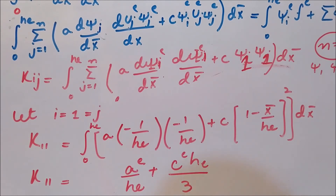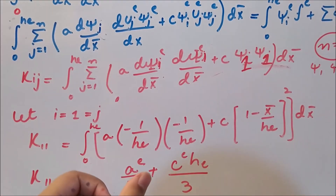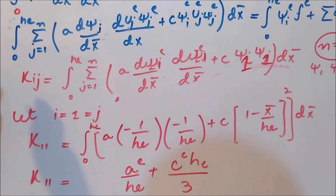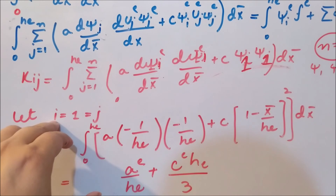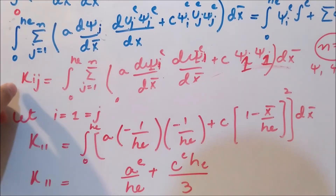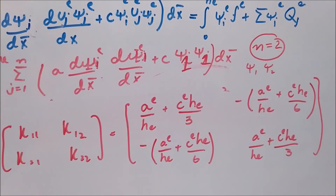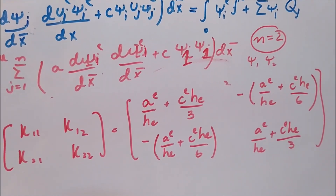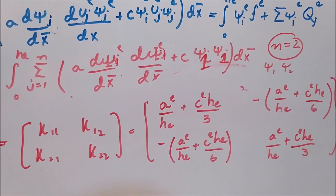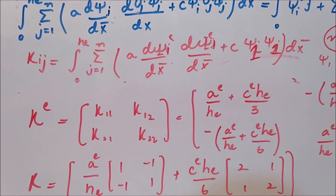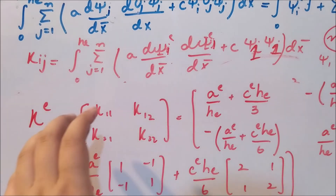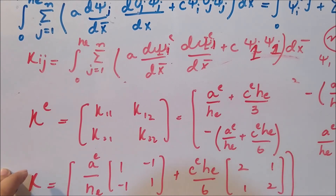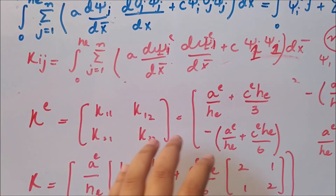After solving for all four values — noting that K_12 = K_21 because the stiffness matrix is symmetric, as discussed in previous videos — the full stiffness matrix for the linear element is assembled. This gives the 2×2 stiffness matrix expressed in terms of constants a, c, and h. In the next video we will solve for the force vector in a similar fashion and see the complete element-level equation combining the stiffness matrix and force vector.